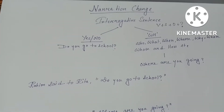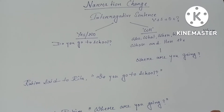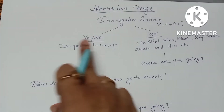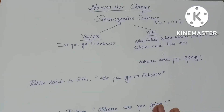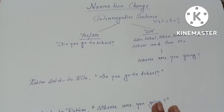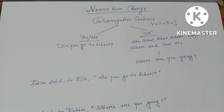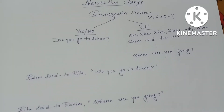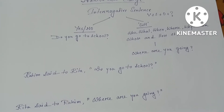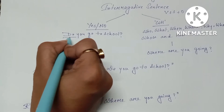We can divide interrogative sentences into two categories: one is yes/no question and another is WH question. A yes/no question means a question with which we can get the answer in yes or no. We can also identify a yes/no question by seeing the helping verb — when the question starts with a helping verb, it is called a yes/no question.